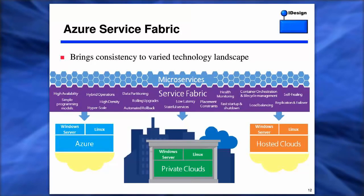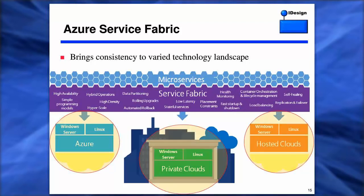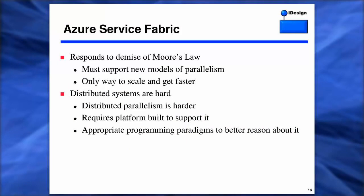You can now lay the fabric in Azure over both Windows and Linux, but you can also deploy it into other hosted cloud environments leveraging either operating system, and equally important for a lot of us in the beginning, the on-premises experience in your own data center over either Linux or Windows. They also needed to respond to the demise of Moore's Law. We can't move forward simply by throwing hardware at the problem — we've lost that crutch. Now we need to be able to support new models of parallelism. That's the only way to scale and get faster.